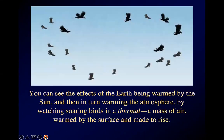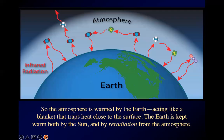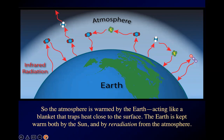On warm summer days you can see buzzards rising and circling without flapping — riding a column of rising hot air warmed by energy from the warm earth. The atmosphere is warmed by the earth: sunlight passes through, warms the earth, and the earth gives off energy that warms the atmosphere. So the atmosphere acts like a blanket, trapping heat close to the surface.